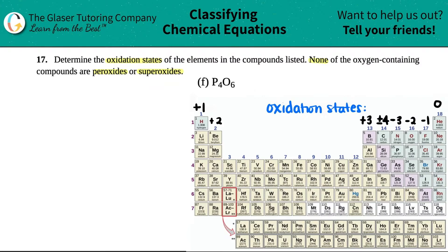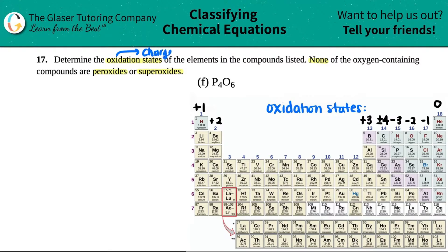Now we have compound F — tetraphosphorus hexoxide, P4O6. We need to find out the oxidation states, also known as the charges, of each individual element. There are only two here, so we need to find out the charges for phosphorus and the charges for oxygen.